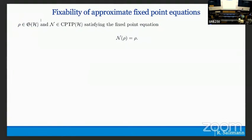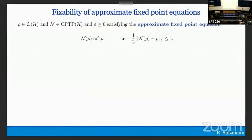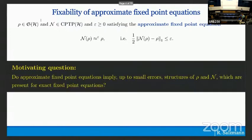The work is about robustness of fixed point equations of states and channels. Let me start with the fixed point equation. This is how I'll write states, and this is how I'll write CPTP maps or channels. We have a fixed point equation if the channel leaves the state invariant. We want to study the robustness of it, so we introduce some error parameter epsilon. We say we have an approximate fixed point equation if this holds true up to error epsilon in trace distance. The motivating question is whether certain structural results which hold true for exact fixed point equations can be proven to hold also up to small error for approximate fixed point equations.